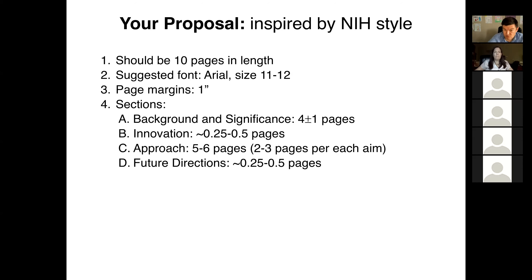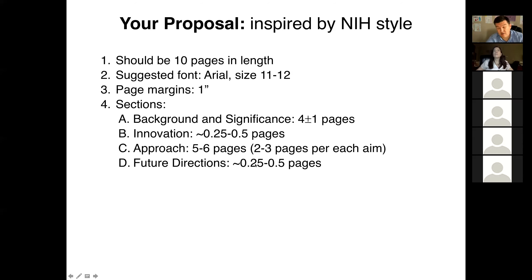Innovation, which we will discuss later, is a smaller section — literally a quarter to half a page. We would really like you to spend most of your write-up on the approach section, where you spend two to three pages per each specific aim, depending on how many aims you have. There is also a relatively small section on future directions, again a quarter to a half of a page. This overview emphasizes where we start today: background and significance, the beginning of the research strategy document.